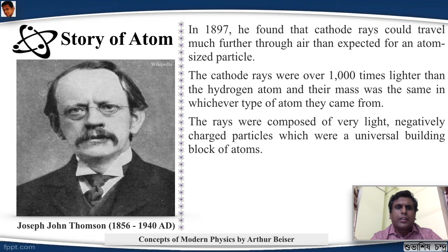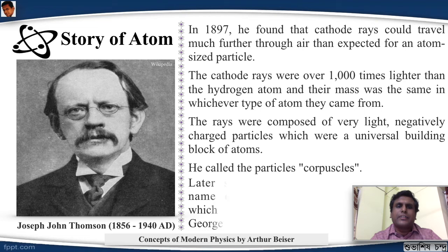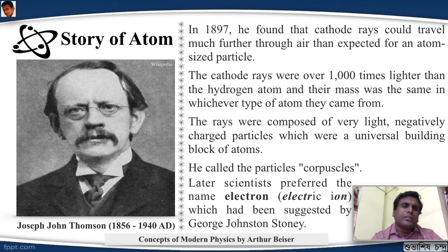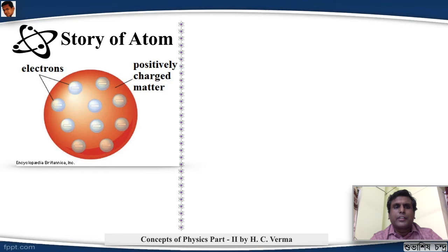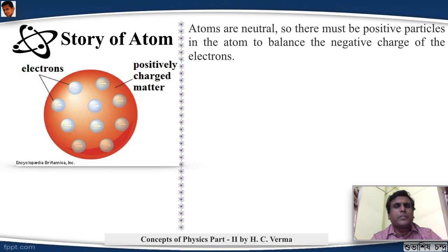So he said that the rays were composed of very light negatively charged particles which were a universal building block of the atoms. He called his particles corpuscles. Well, you don't hear the name because the later scientists preferred the name electron, which was suggested by the Irish scientist George Johnstone Stoney.